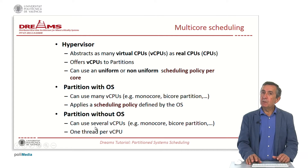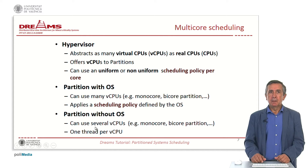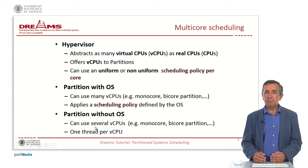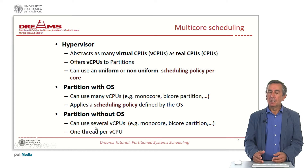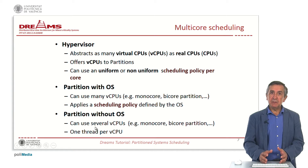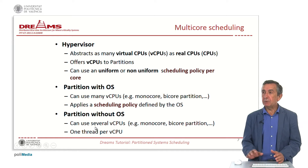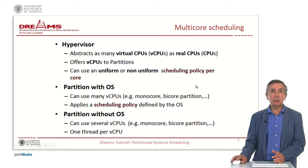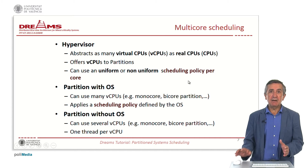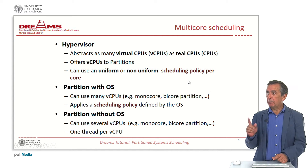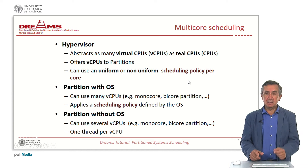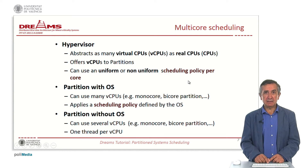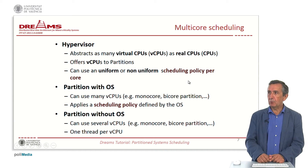In a multi-core system, the hypervisor can provide as many virtual CPUs as there are real CPUs in the hardware. It offers these virtual CPUs to partitions and can use a uniform or non-uniform scheduling policy per core — so one core can have a cyclic scheduling policy and another core can be scheduled under a different policy.